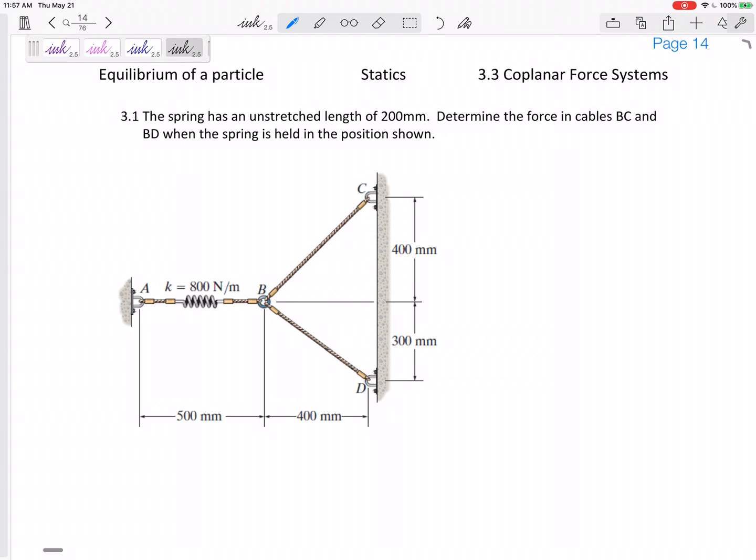All right, let's look at this 2D equilibrium problem. This spring right here has an unstretched length of 200 millimeters. Determine the force in cables BC and cable BD when the spring is held in the position shown.